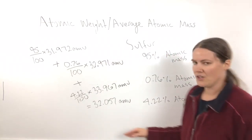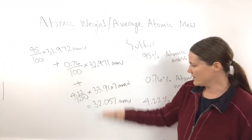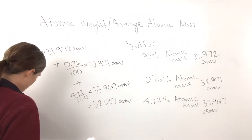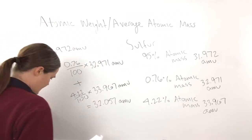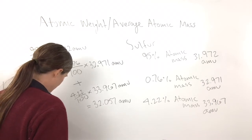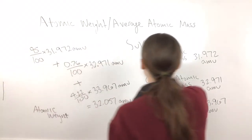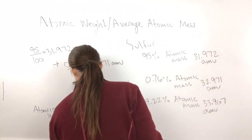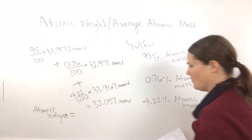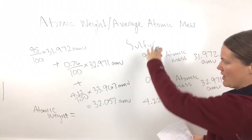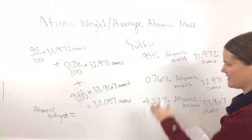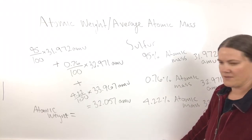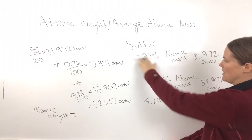The general formula for calculating this weighted average — whether you call it atomic weight, average atomic mass, or something else — is the same idea. Don't get too caught up in the terminology; just realize you're calculating a weighted average of the different isotopes for a specific element.